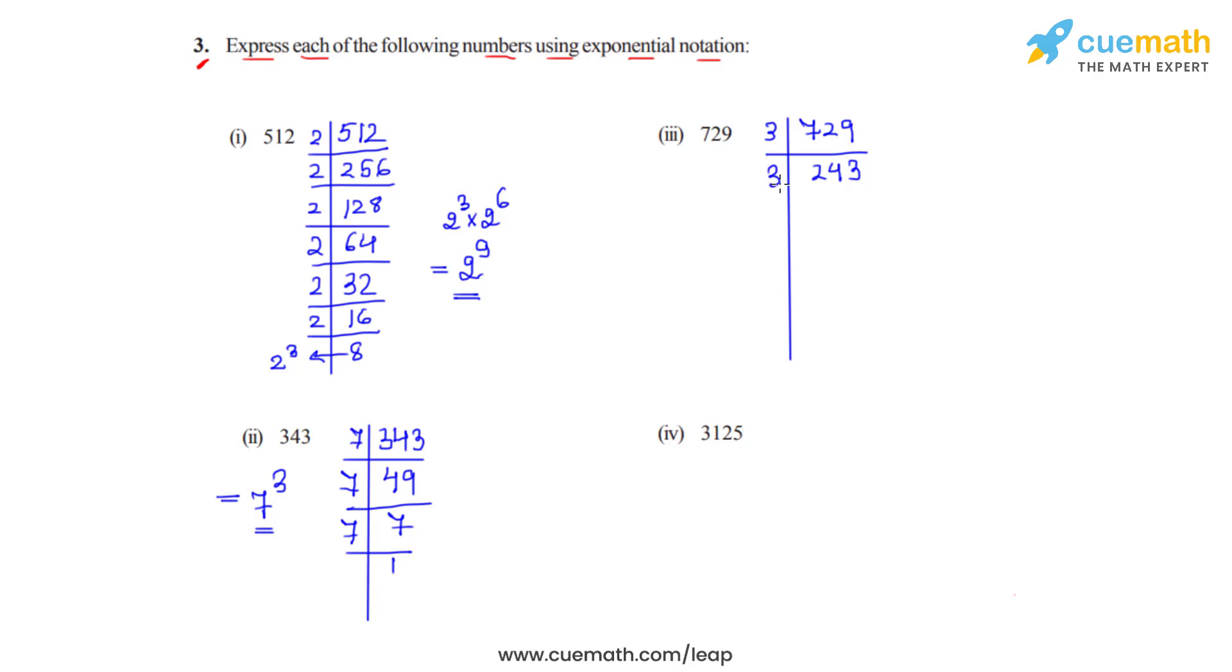243 divided by 3 gives us the answer as 81. 81 on division by 3 gives us the answer as 27. 27 being divided by 3 gives us the answer as 9. And we know that 9 is a square of 3. So we can write 9 as 3 square. So 729 can be written as 3 raised to 6 in exponential notation.